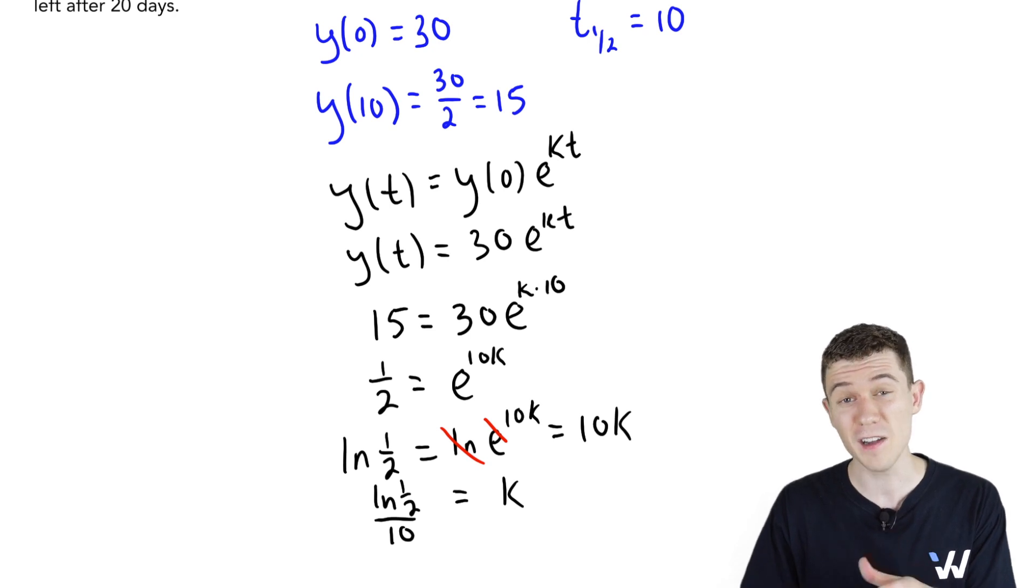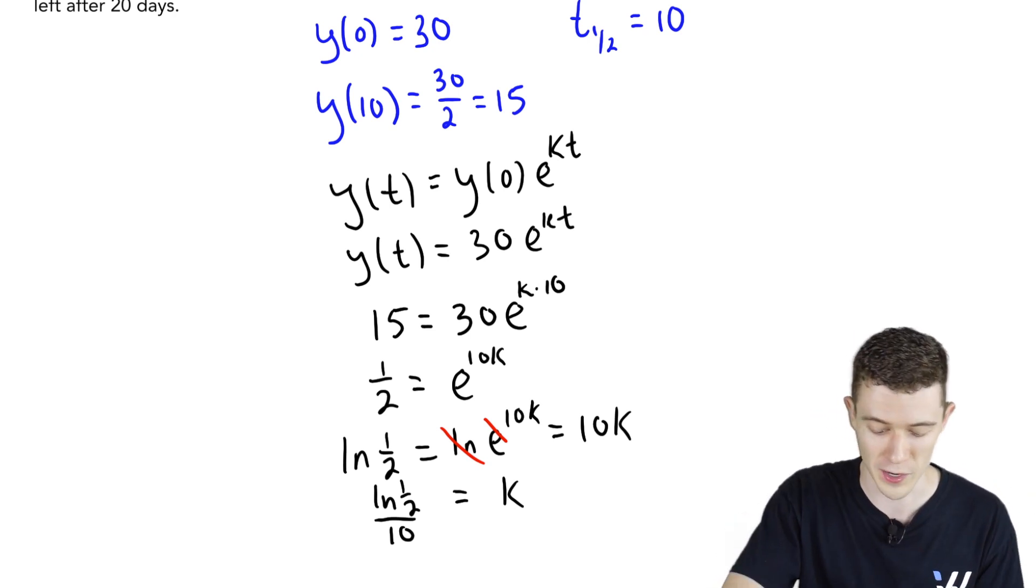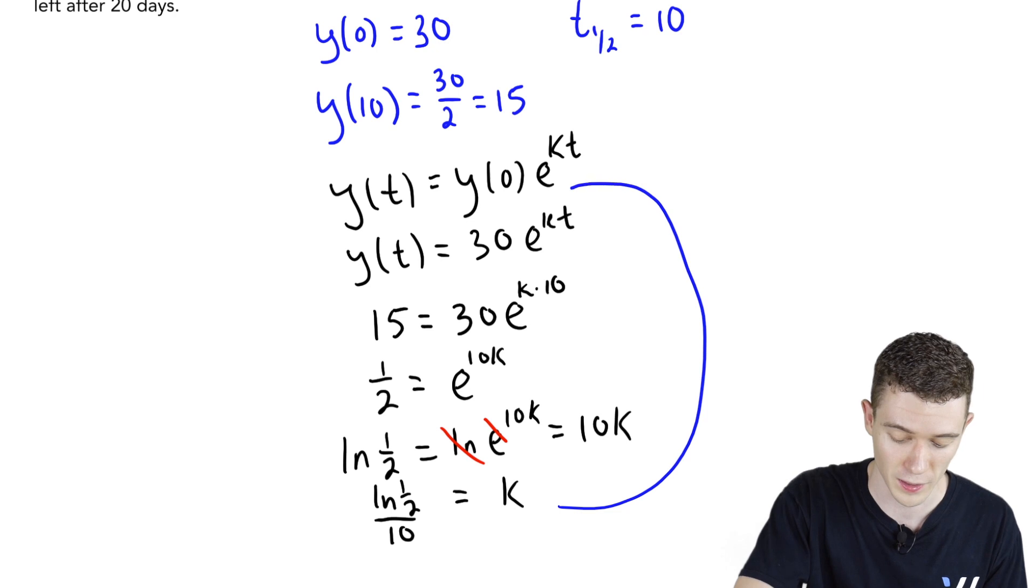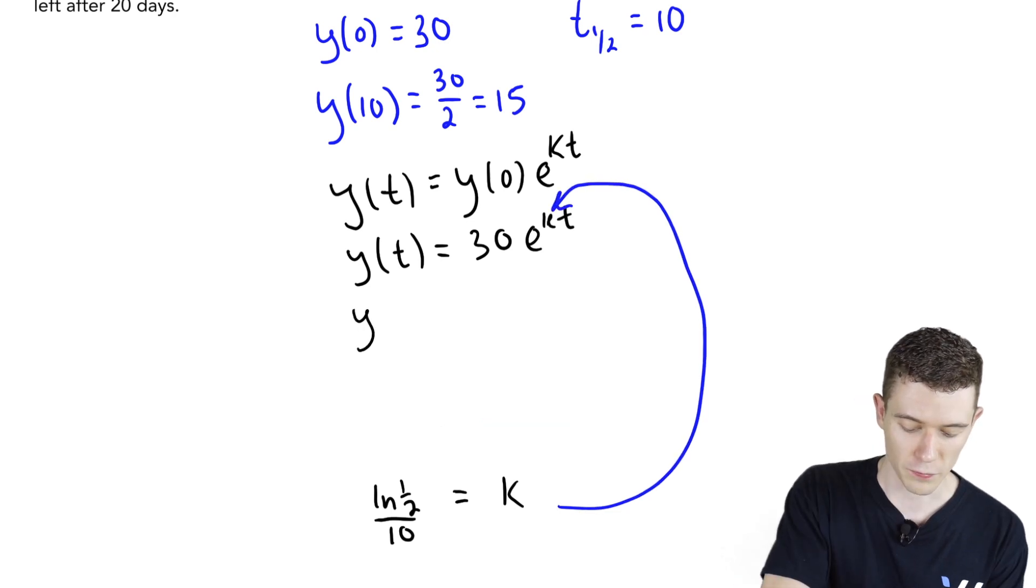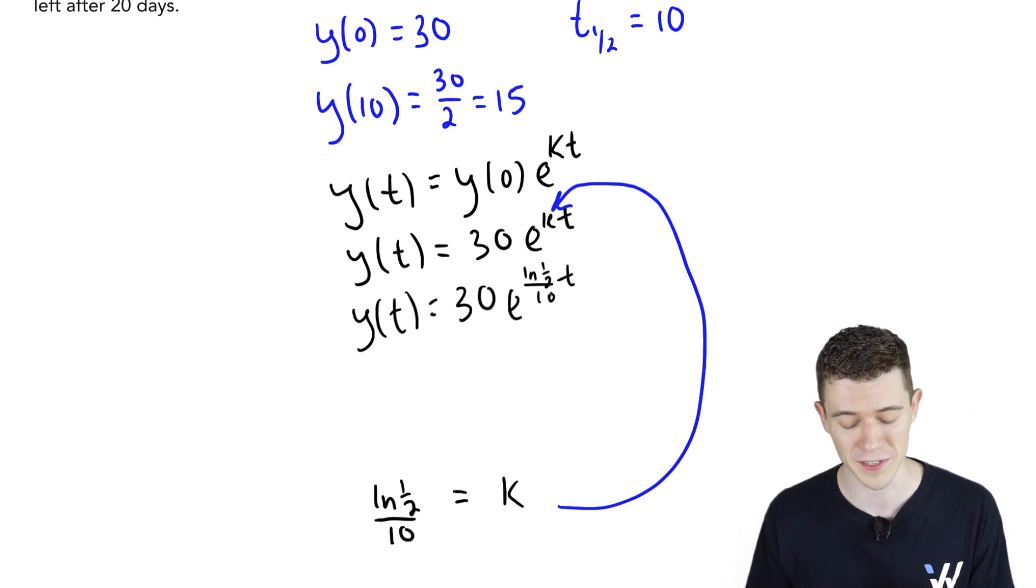Now that we have k, we can plug it back into our function and actually answer the question. We'll take this value and plug it back in. So we get our full y(t) is 30e^(natural log of 1/2 over 10 times t). It's not the nicest equation you've ever seen, but we can answer our question.